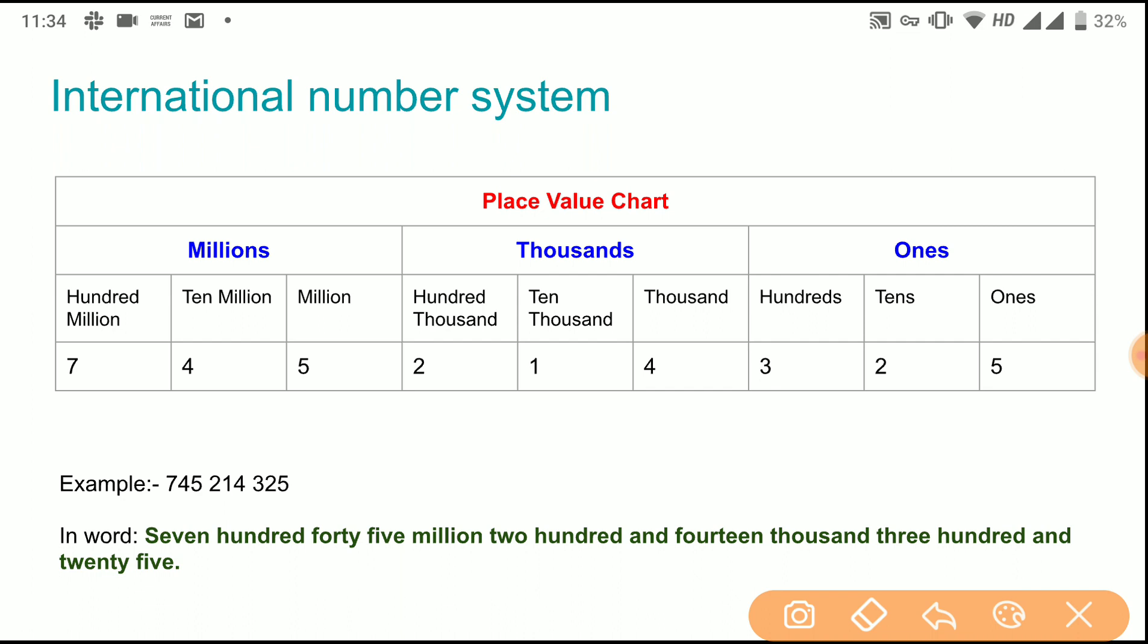325. So the digits written in millions, we will read out all together: 745 million. Again I am repeating: 214 thousand and 325 ones.